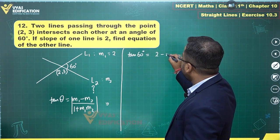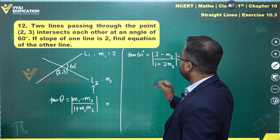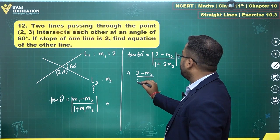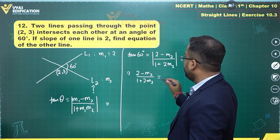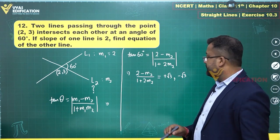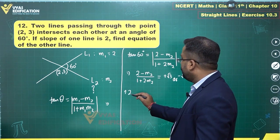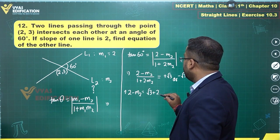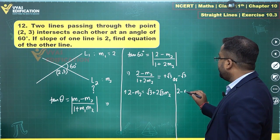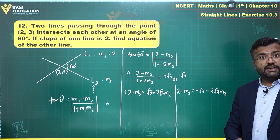So: tan 60° = |(2 − m2) / (1 + 2·m2)| = √3. This gives us two cases: (2 − m2) = √3(1 + 2m2), or (2 − m2) = −√3(1 + 2m2), which expands to 2 − m2 = √3 + 2√3·m2, or 2 − m2 = −√3 − 2√3·m2.